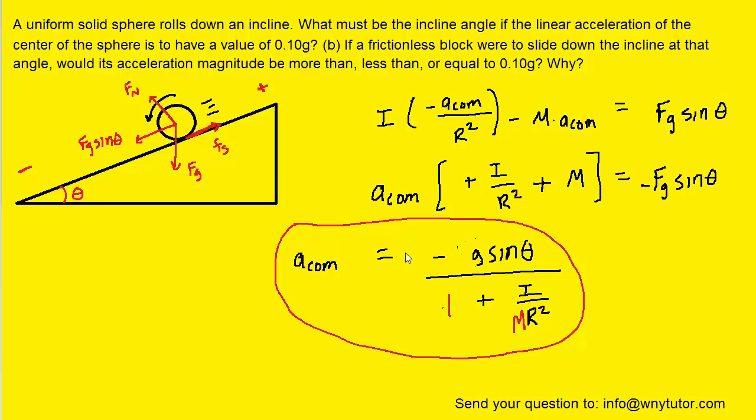We want that acceleration to have a value of 0.1g, so we're going to substitute that in for the acceleration about the center of mass. And in fact that acceleration has to be negative since the object is accelerating down the ramp. We can see then that a negative sign on the left and right will cancel, as will the g's. We're essentially dividing both sides of the equation by g. We can next go ahead and multiply both sides by this term here in the denominator so that it moves over to the left.